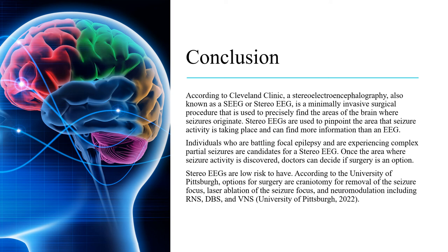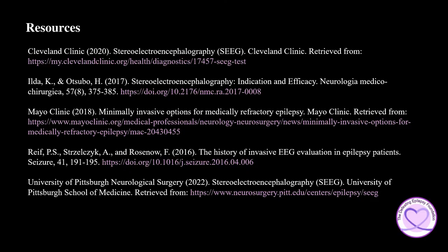Stereo EEGs are low risk to have. According to the University of Pittsburgh, options for surgery are craniotomy for removal of the seizure focus, laser ablation of the seizure focus, and neuromodulation including RNS, DBS, and VNS. To learn more about Stereo EEGs, please check out the resources used in the presentation today.